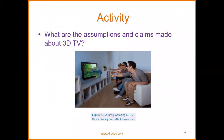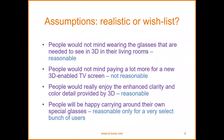What are the assumptions and claims made about 3D TV? 3D television — when you wear the 3D glasses, the pictures or objects appear to be moving and coming toward you, like they are real. In terms of assumptions: people would not mind wearing glasses to see in 3D in their living rooms — that would be reasonable. People would not mind paying a lot more for a new 3D-enabled TV screen — not reasonable, because some cannot afford it.